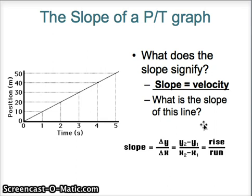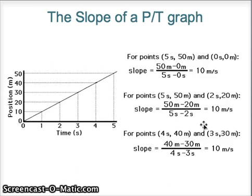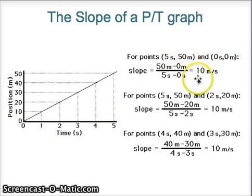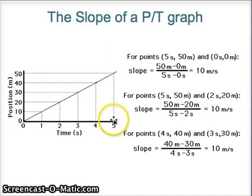Looking at the calculations for a position-time graph, we take this line and find the slope of this linear graph. We use 50 meters and 0 meters, and 5 seconds and 0 seconds, giving us 10 meters per second as our slope. Ten meters per second, as we established earlier, is also the velocity. We can choose different points along this line and confirm that the velocity is 10 meters per second — meaning the car is moving at constant velocity.